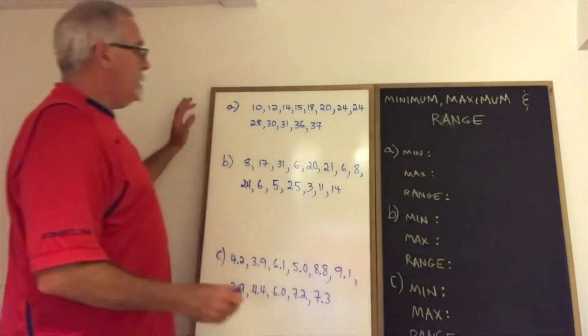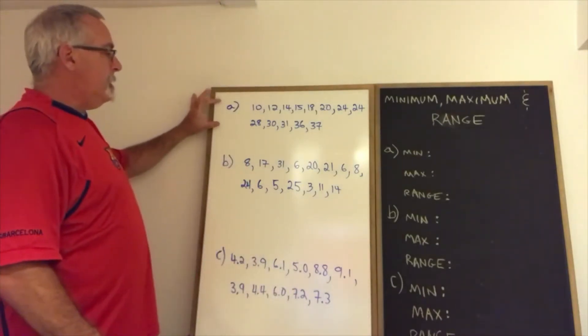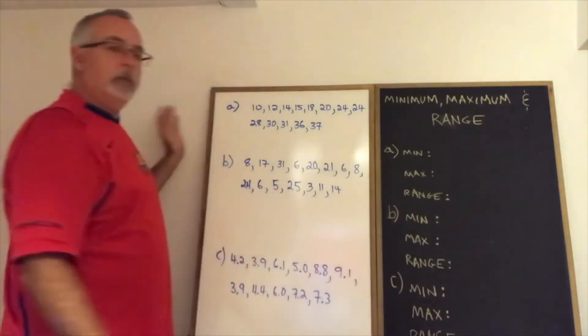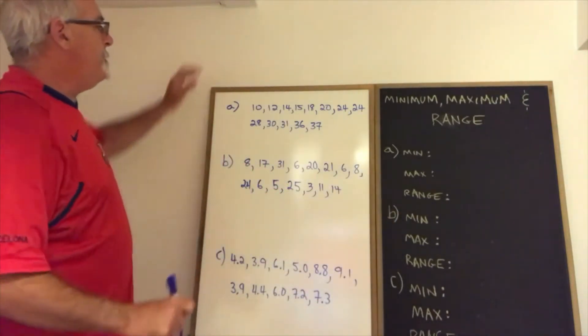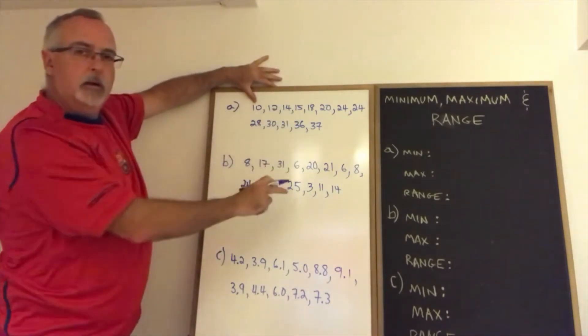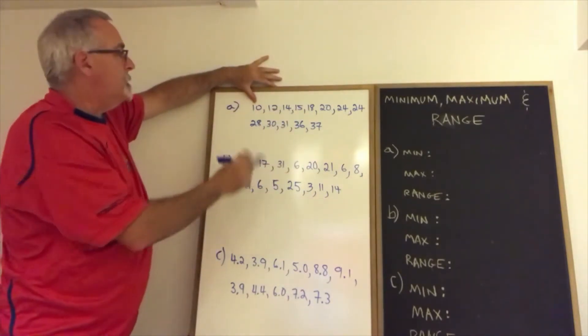Here we have three sets of data, A, B, and C, and for each we're being asked for the minimum, the maximum, and the range. So for A, the data has been arranged from smallest to largest, which makes this easier for us.